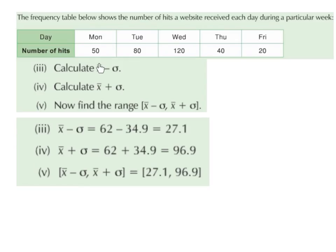Part 3, calculate x bar minus the standard deviation. So the mean minus the standard deviation. So remember we got the mean to be 62. So we're going to have 62 minus the standard deviation, which we got to be 34.9. So 62 minus 34.9 is 27.1.